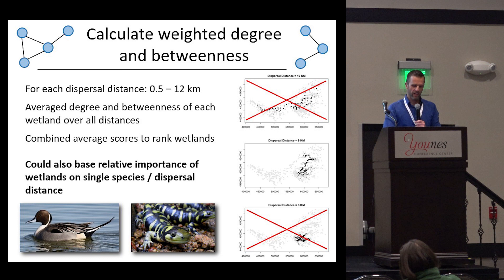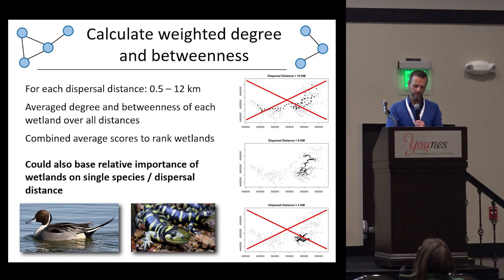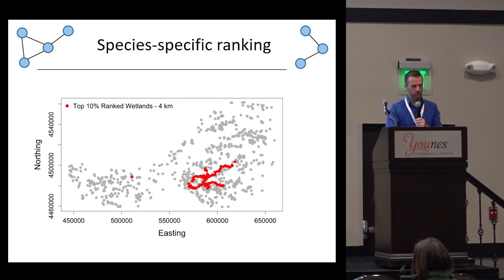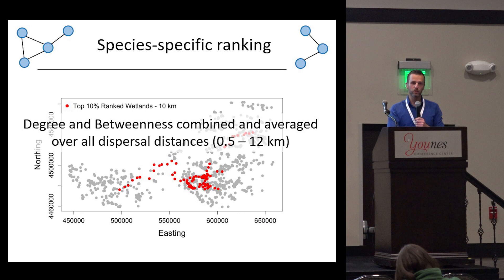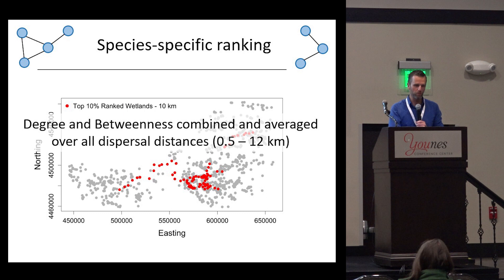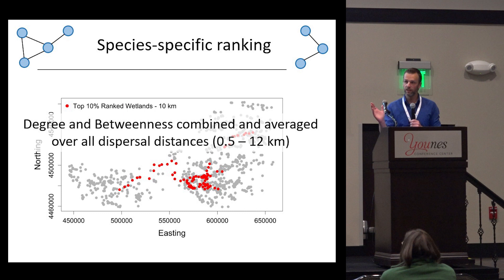We averaged over all distances of interest, but you can also construct a network based on just one dispersal distance. Maybe you only want to look at a particular species. You can see the top 10 ranked wetlands for a species that can move up to 4 kilometers versus a species that can move up to 10 kilometers — just by the restrictions in dispersal capabilities, you end up with different prioritizations. Wetlands that might be important for species with limited dispersal capabilities might not be that important for others. For this talk, we combined and averaged over all dispersal distances to come up with one ranking.